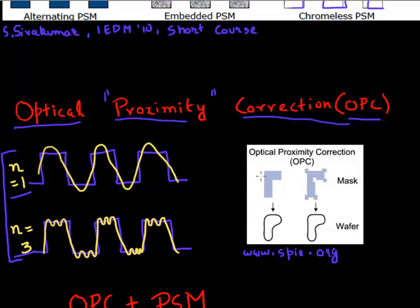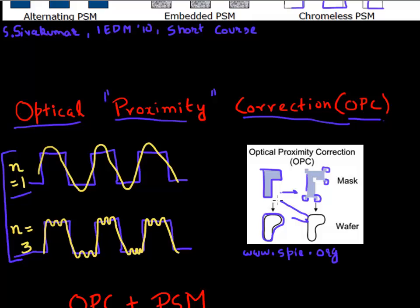So how about we reverse-engineer that phenomenon? That is what OPC does. It knows we have finite capabilities — we can capture maybe one, two, three, or four orders of diffraction — and it knows there'll be interference. So if we print a feature like this on our mask, it actually prints differently because of interference and diffraction. We ask: can we design a mask with additional features that overcome some of these effects, helping print a better, more accurate feature? That is what OPC involves.